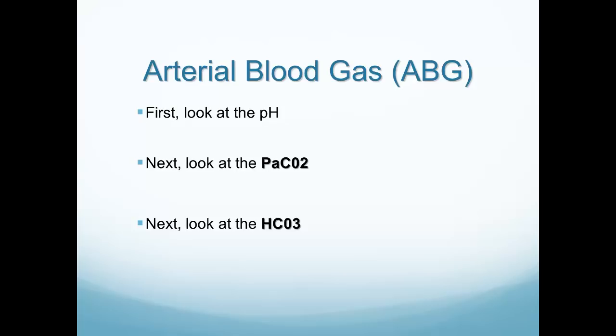To analyze a blood gas, we follow a few steps. First, look at the pH and determine if it's acidotic, alkalotic, or normal. Next, look at the PaCO2 and make the same determination. Then look at the bicarb and ask whether it's acidotic, alkalotic, or normal. Once we've evaluated each of those three components, we match the ones that agree. For example, if the pH is acidotic and the CO2 is acidotic, those two things would match.